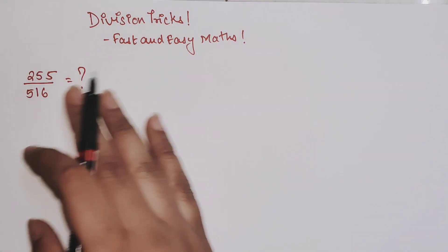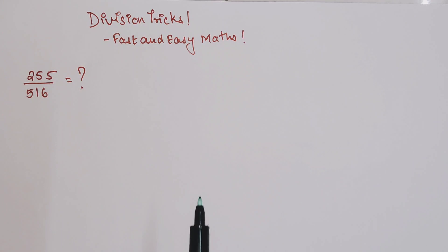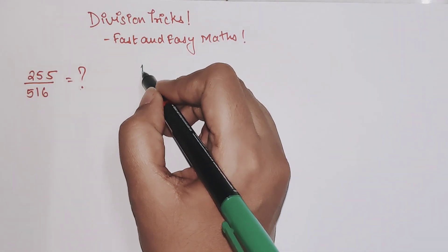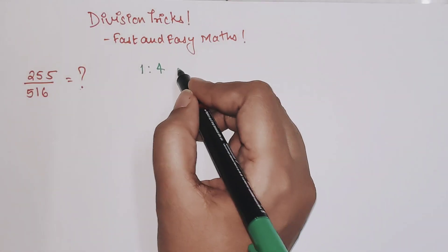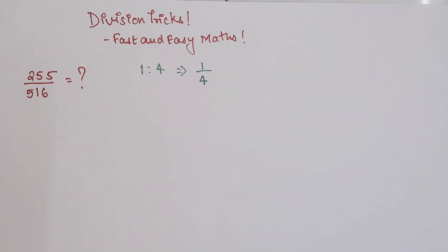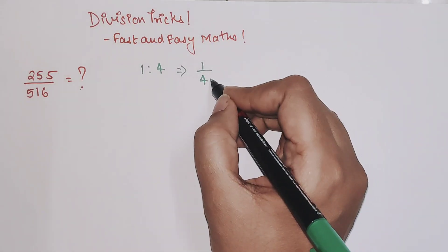Before actually starting with this, I want you to understand a very small concept of ratio. Let's say we have a ratio of 1:4, so basically we're saying that we have a fraction of 1/4. Now there is a rule of fractions.